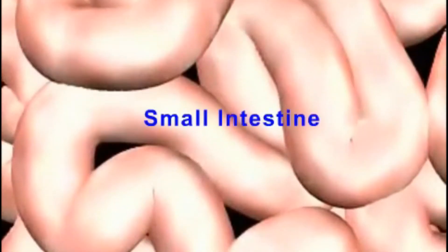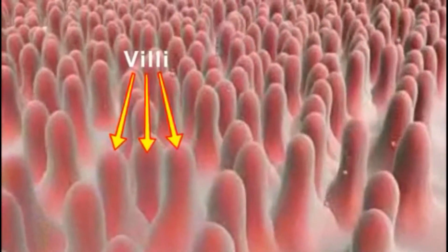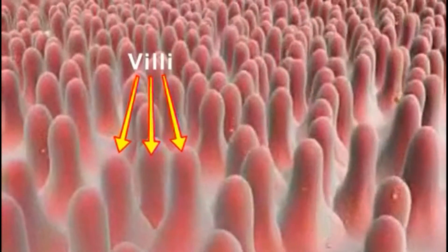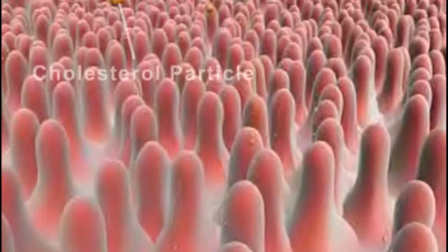When fatty foods are ingested, the cholesterol particles from the food enter the small intestine. The luminal surface of the small intestine is covered by small projections called villi, which absorb the cholesterol particles and transport them into the bloodstream.